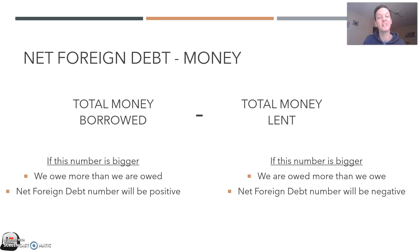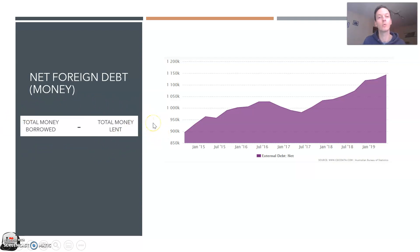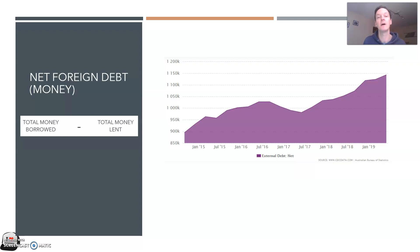Here's a trend graph showing the net foreign debt position, which relates to money. As you look at the axes, you can see these are all positive numbers. I want you to pause the video, look at how net foreign debt is calculated, and make a prediction: have we borrowed more money than we've lent, or have we lent more money than we've borrowed? Don't move on until you've made a prediction.